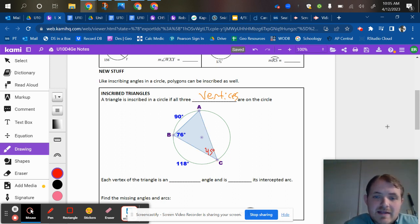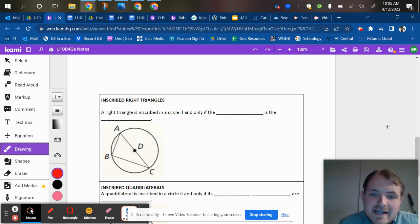Same concept, A is going through the arc of 118 right there. So if I cut 118 in half, I get 59.